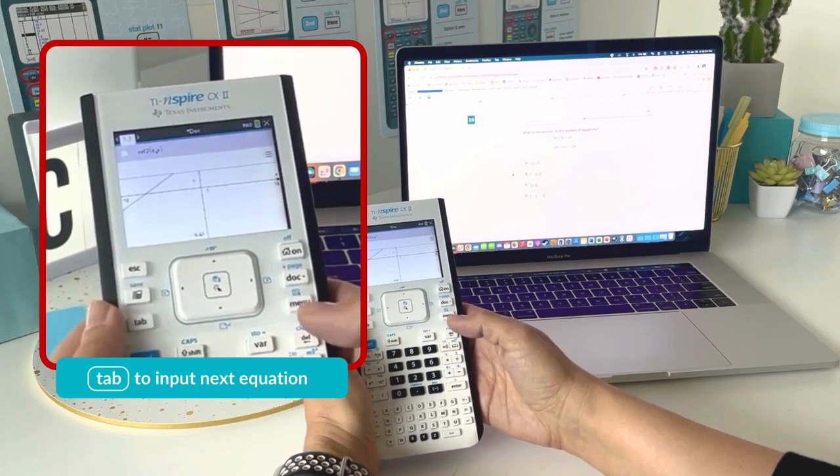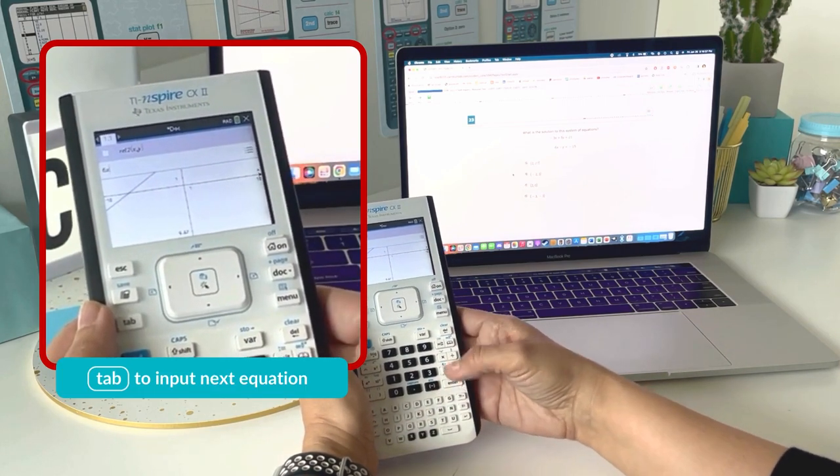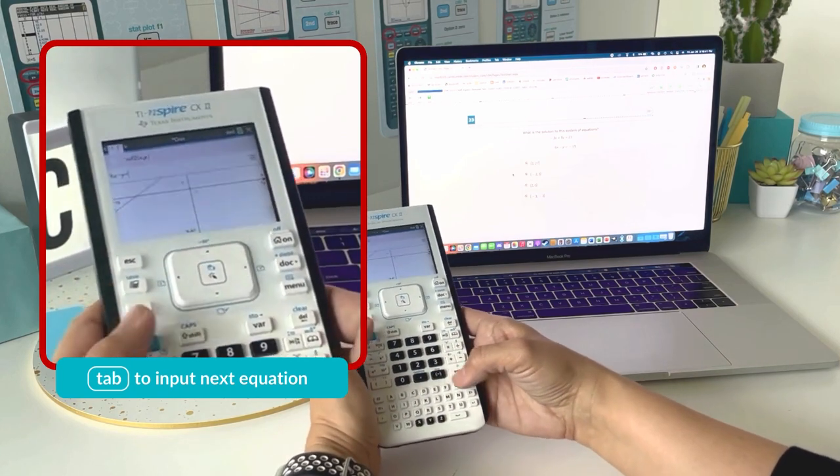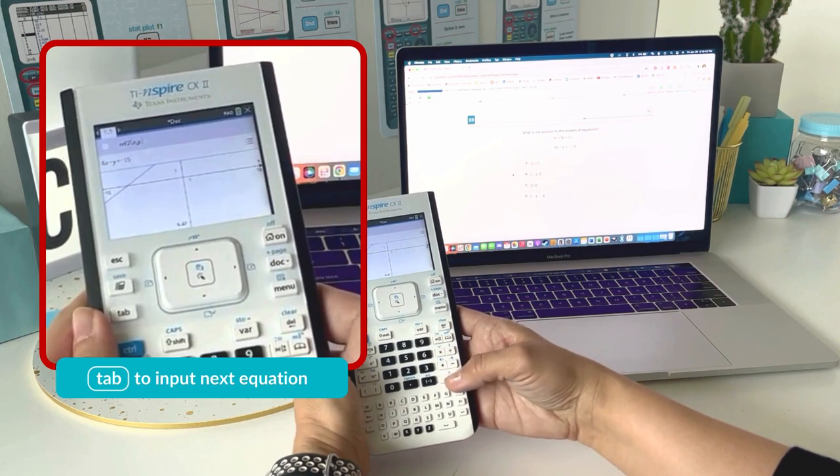I'm going to hit tab and enter the second equation, 6x minus y equals negative 15, and hit enter.